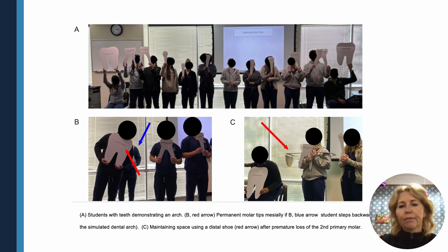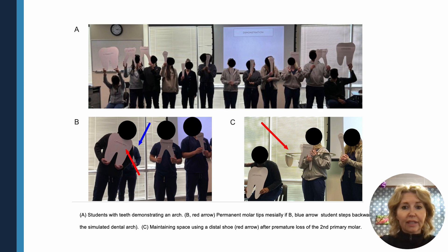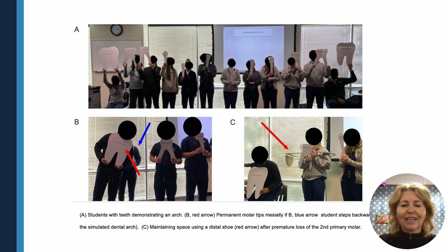In picture B, the red arrow shows the permanent molar tipping forward towards the front of the mouth, when the student represented by the blue arrow steps backwards out of the dental arch as if she were extracted. Picture C shows maintaining the space with a distal shoe, shown by the red arrow, which is an appliance that keeps the adjacent teeth from shifting.